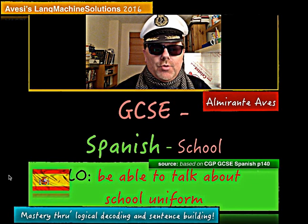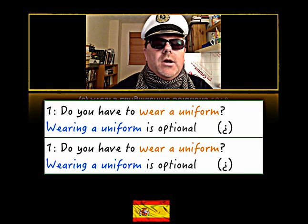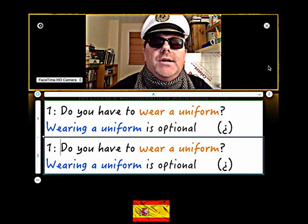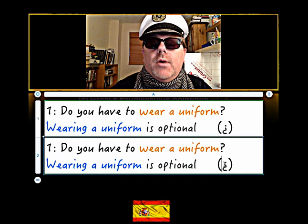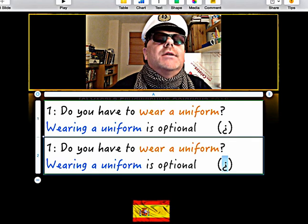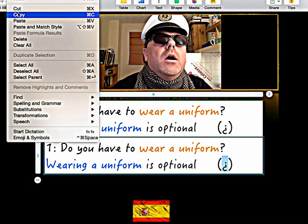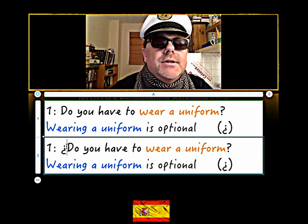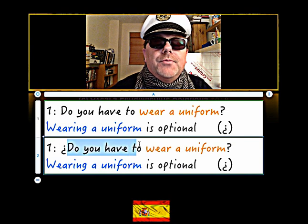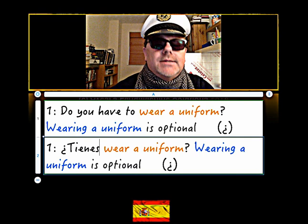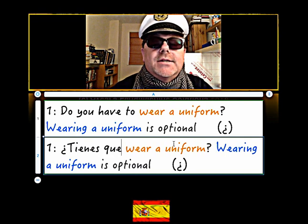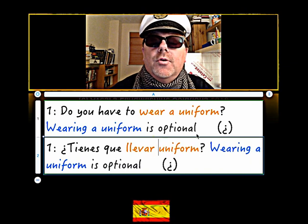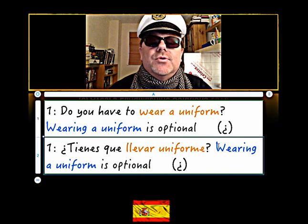GCC Spanish school - we're going to talk about school uniform. Number one: do you have to? We need an upside-down question mark straight away, so let's copy it and put it in. Do you have to - sorry, that's 'tienes que', so 'tienes que' - where is your bar? And then 'uniform' - don't need an 'a' there, just put 'uniforme'.